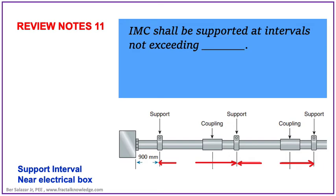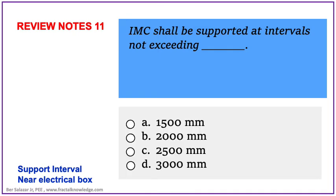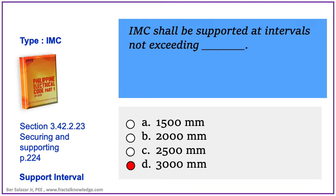The next problem asks: IMC shall be supported at an interval of how many meters? Drawings are presented for visualization but during board exam they are not there. The choices are 1.5 meters, 2 meters, 2.5 meters, or 3 meters. Based on the choices one might choose letter A, but reading PEC 3.42.2.23 paragraph B, the correct answer is letter D: 3 meters for horizontal support. For vertical support interval, the 3-meter support becomes 6 meters, provided the ends of the IMC are all threaded coupling.